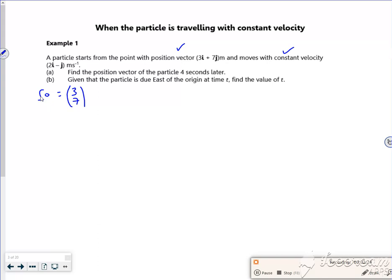So we know that the acceleration is zero. It's got a constant velocity, so my u and my v are both equal to (3, 7) there.